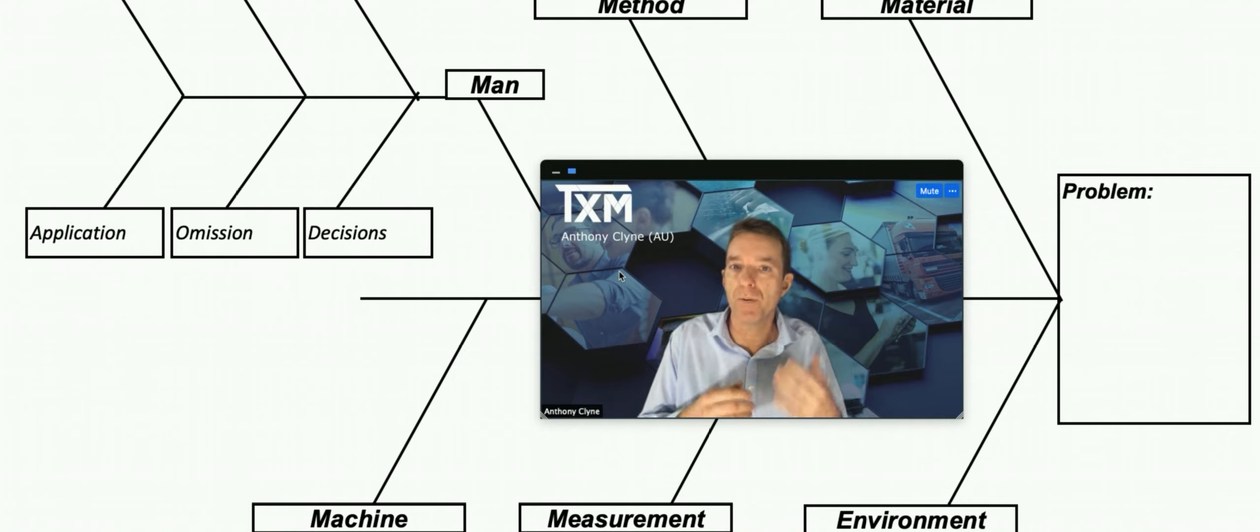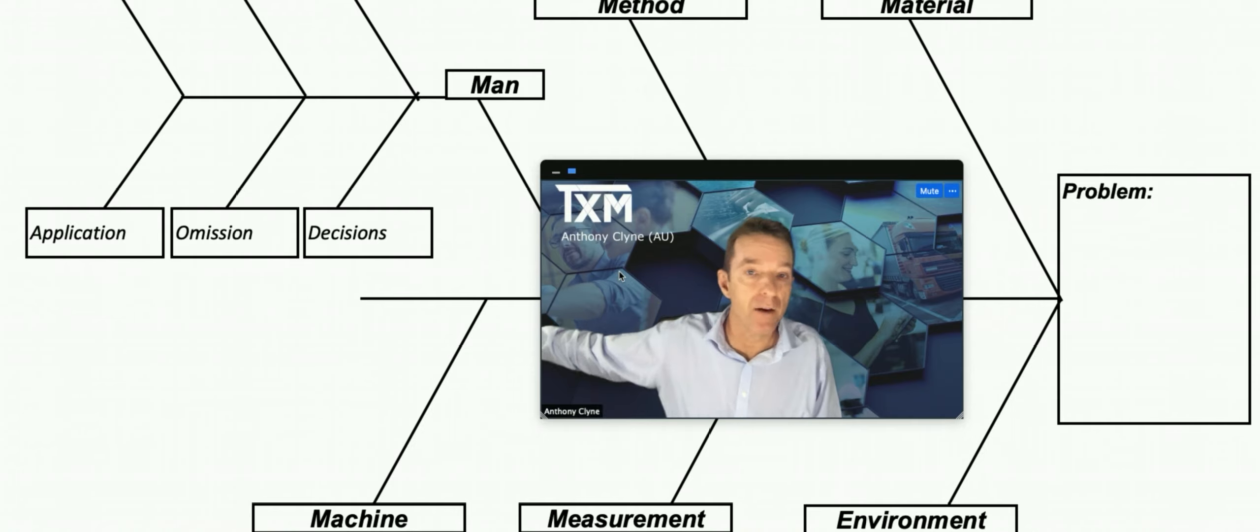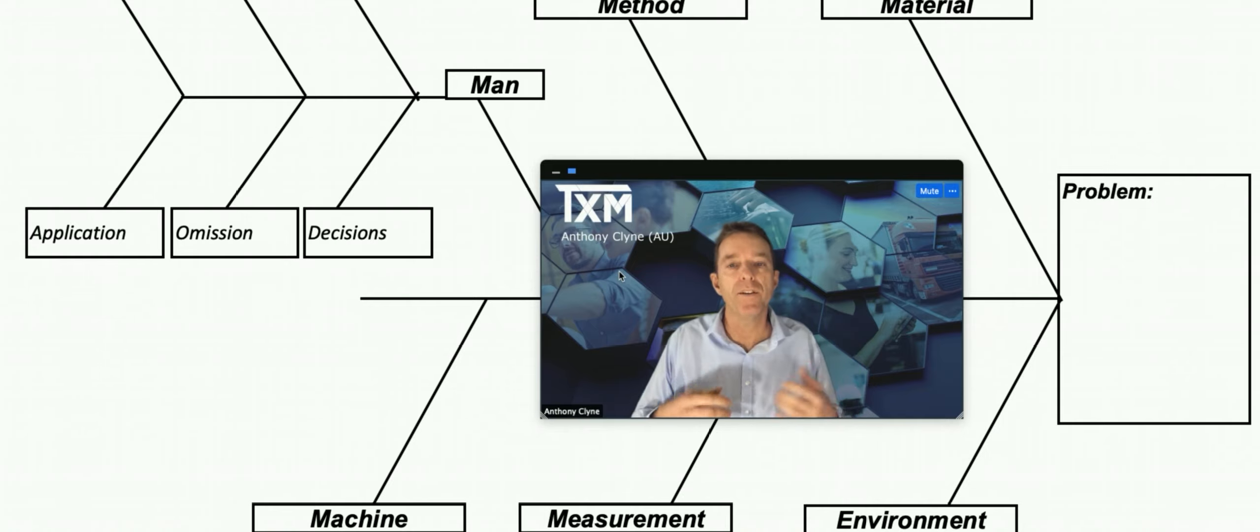Decisions is the one where the person knew that it wasn't quite right or they had to make a decision to go away from the standard and they made a decision and it caused the defect. We break that one down, we don't break down the other branches and that's because it's quite easy to talk about machines and they don't get defensive.